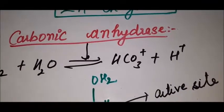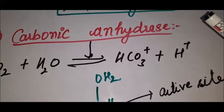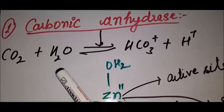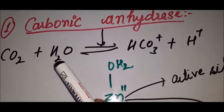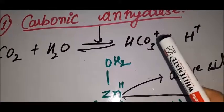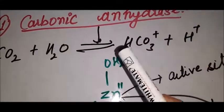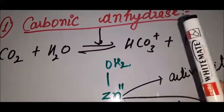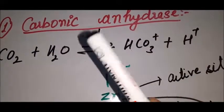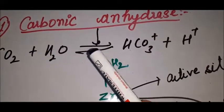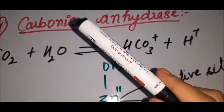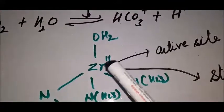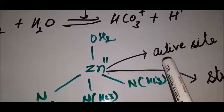We will start with carbonic anhydrase. Carbonic anhydrase catalyzes the reaction: CO2 plus H2O converts to HCO3⁻ and H⁺. We have studied where CO2 is transferred and how it transfers to hemoglobin and myoglobin — this is that reaction. The active site of carbonic anhydrase is Zn²⁺.